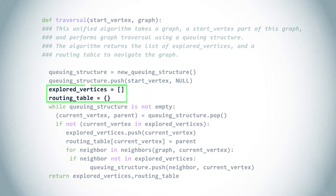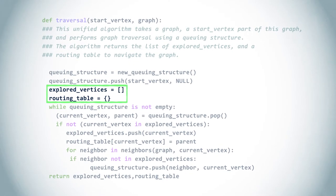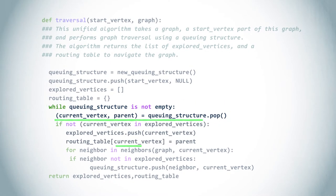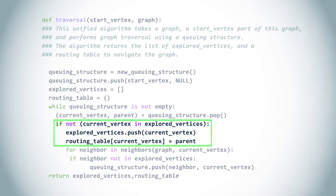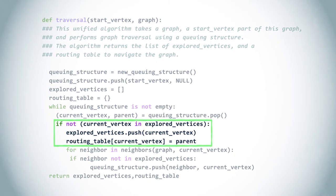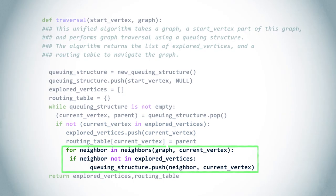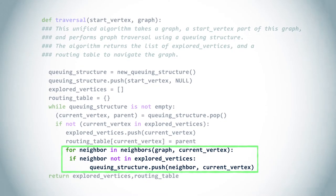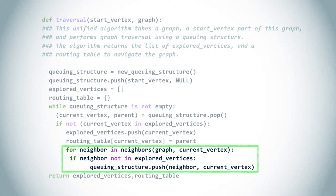We also create the initially empty set of explored vertices and the initially empty routing table. Then, as long as the queuing structure is not empty, we pop a vertex and its parent. If this vertex is not already explored, we mark it as explored and update the routing table by associating the vertex with its parent. Finally, we add all unexplored neighbors of the vertex to the queuing structure, with the current vertex as parent. If the vertex we popped was already explored, we simply ignore it.